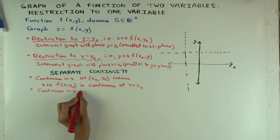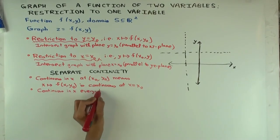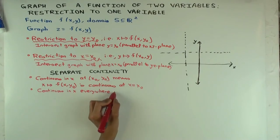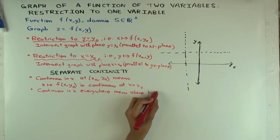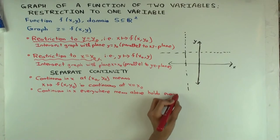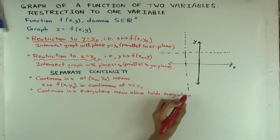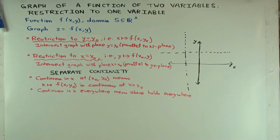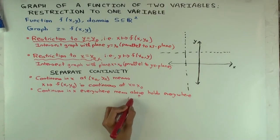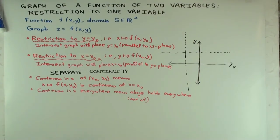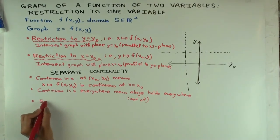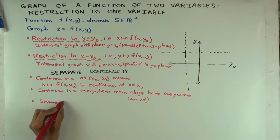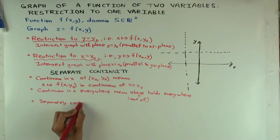Continuous in x everywhere means the above holds everywhere. You have to be a little careful about boundary points — you'll just have one-sided continuity there. Separately continuous — whether at a point or everywhere — what does that mean?